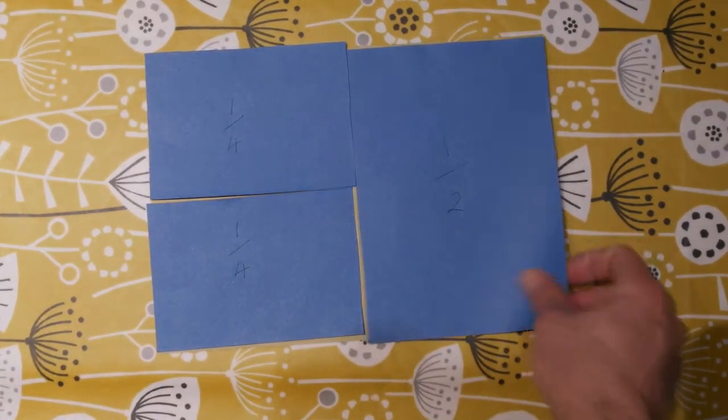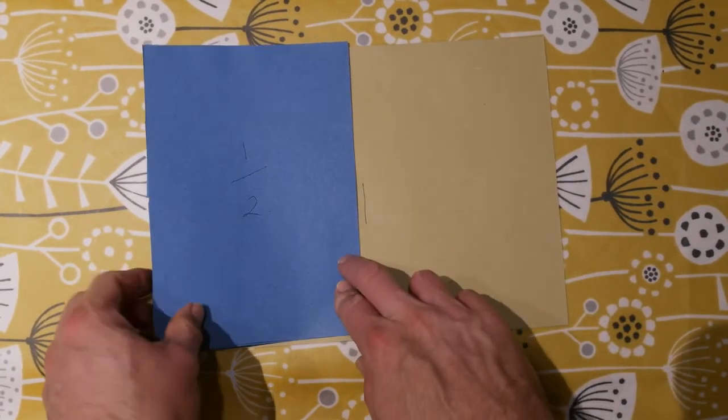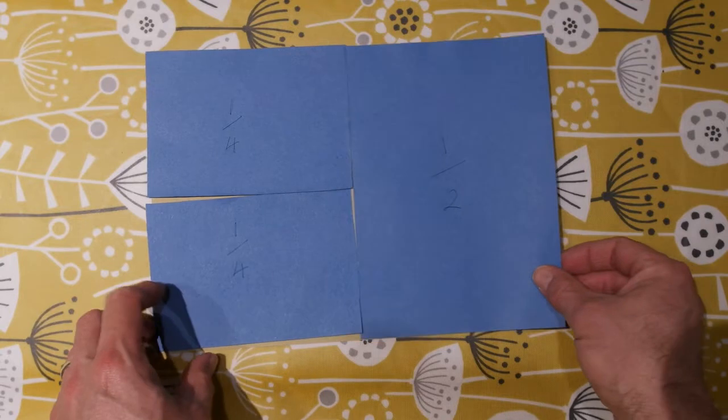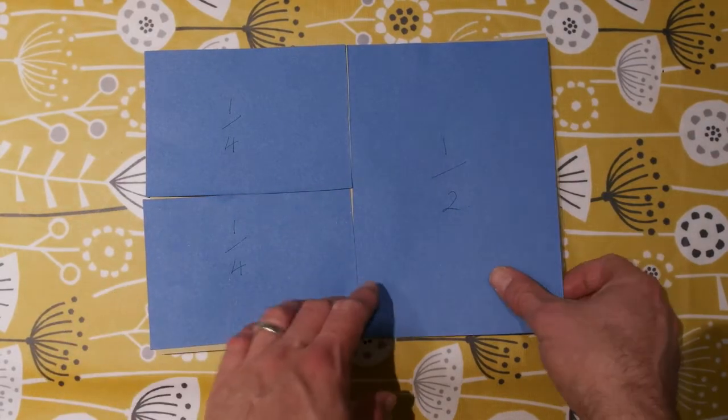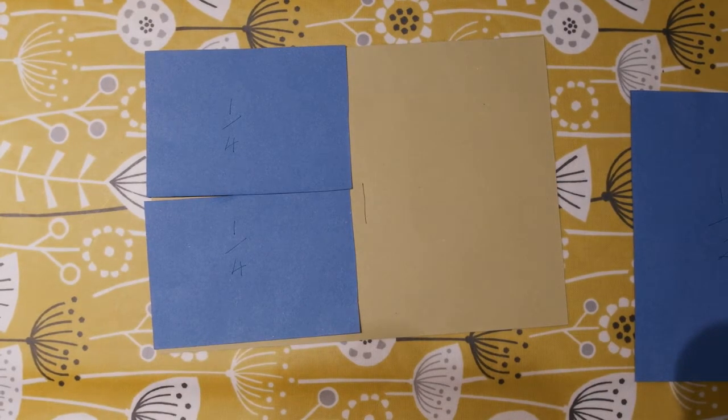So we know that two quarters are the same as a half, because they take the same amount of space, which means that two halves make a whole. Or if we make some more of these, we should have four quarters which are the same as a whole. So let's try that.